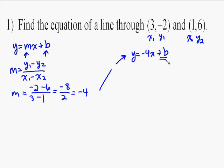Now we solve for b. We have to pick one of the two points - it doesn't matter which one. I'll pick the first one and put the y-coordinate negative 2 in for y and the x-coordinate 3 in for x. So you get negative 2 equals negative 4 times 3, which is negative 12, plus b. Add 12 to both sides, and you get b equals 10.